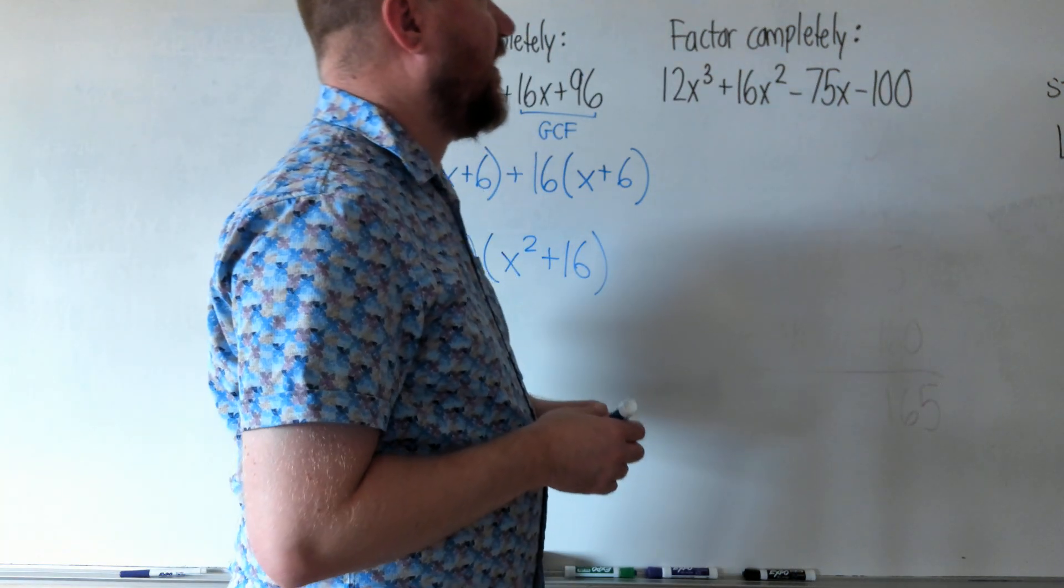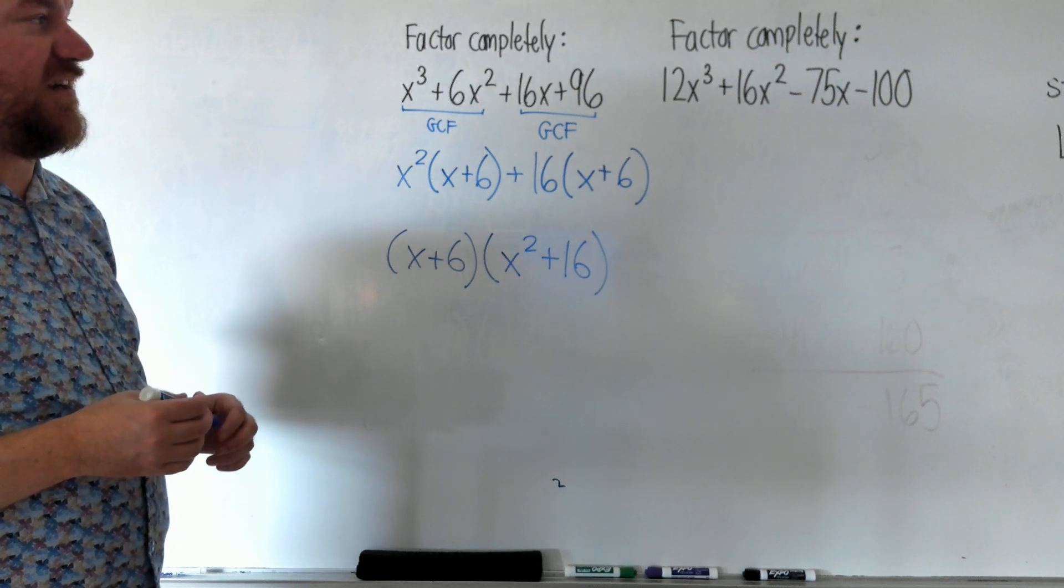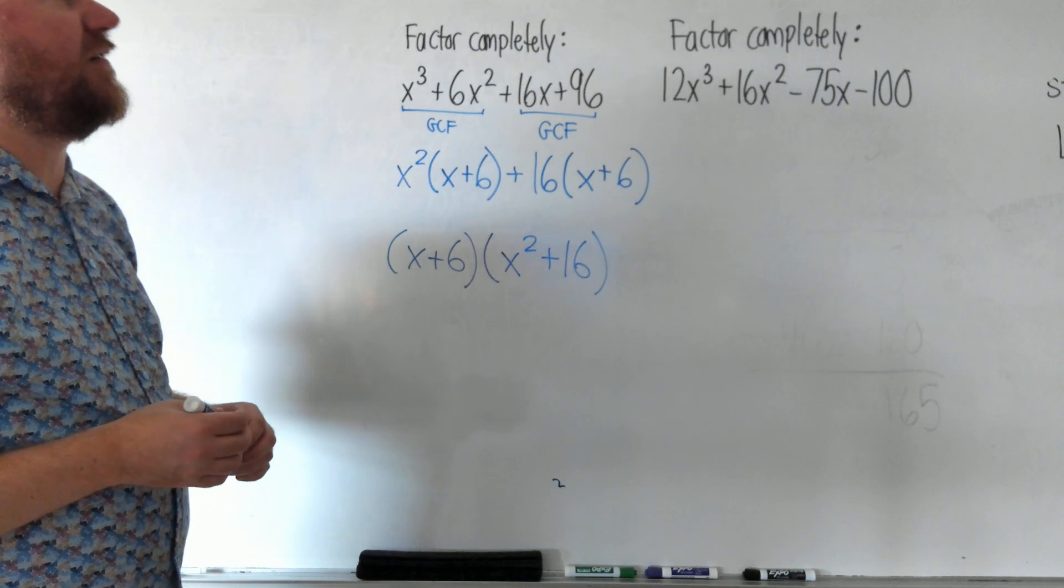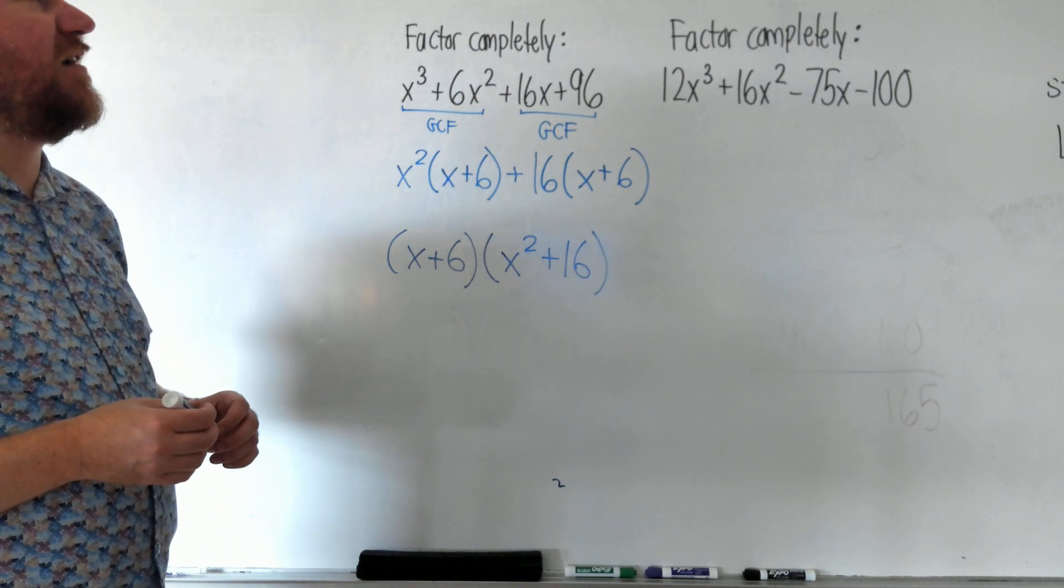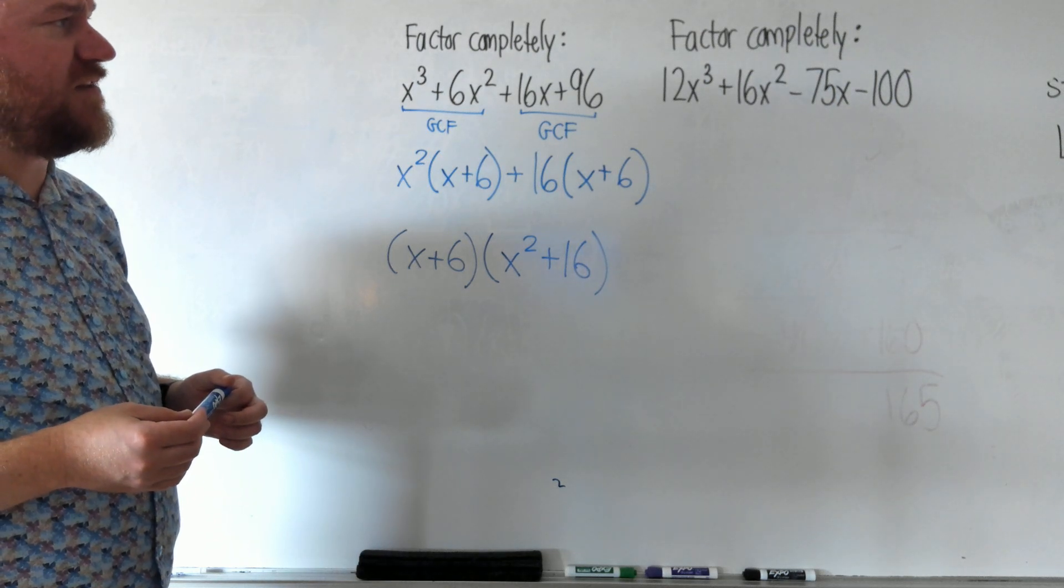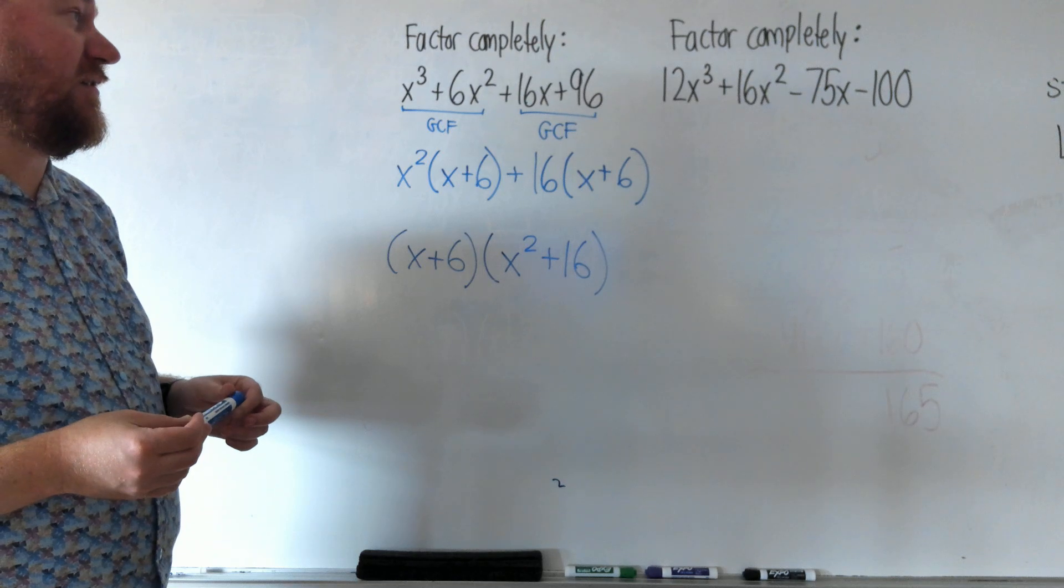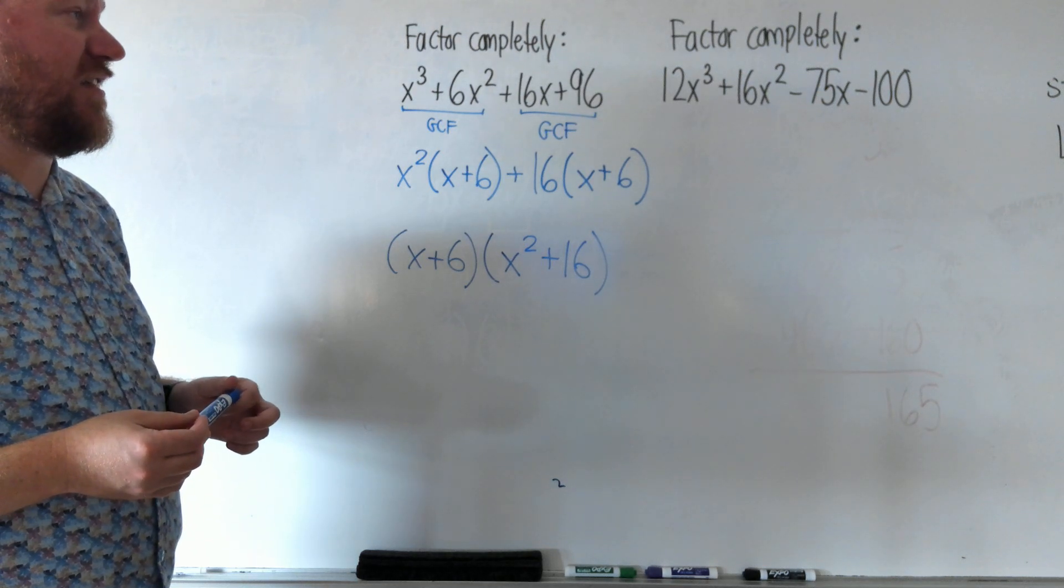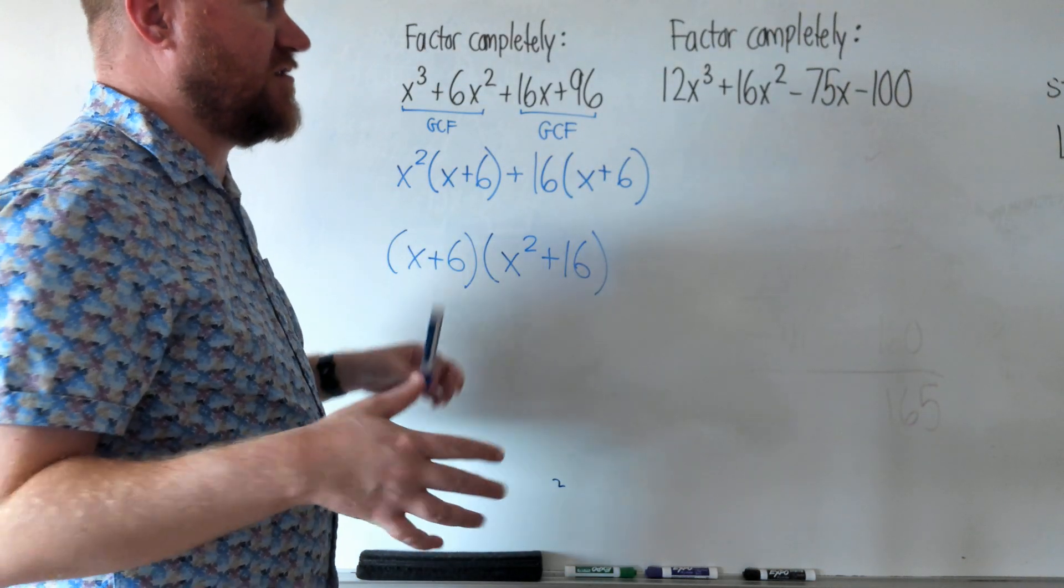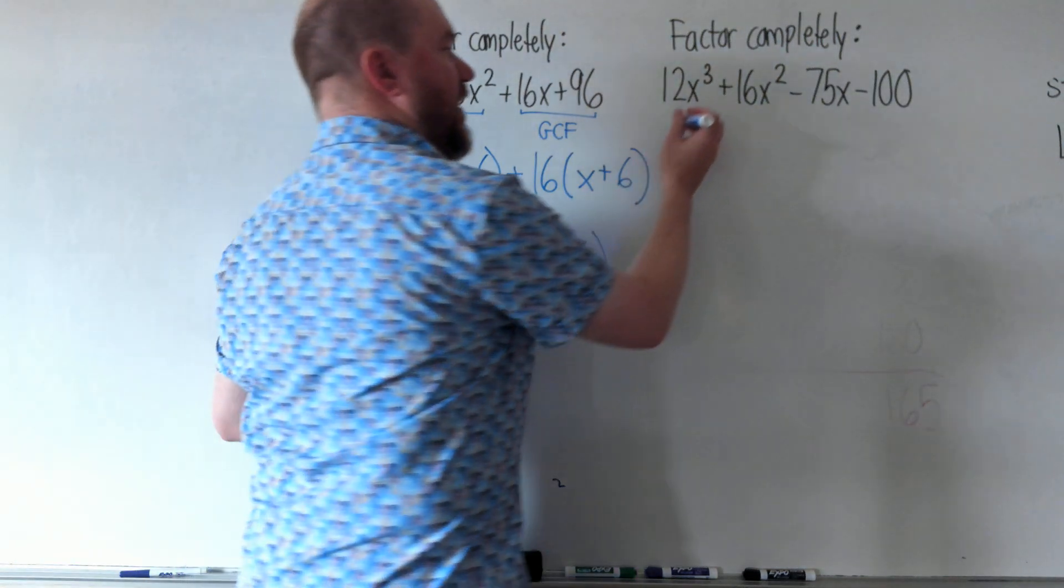Let's take a look at the second example here. Factor completely 12x³ + 16x² - 75x - 100. Same process here. We could do GCF first, right? All of these numbers are divisible by... maybe they're not divisible by anything. You should always check to see if there's a GCF of everything first. In this case, there's not, so let's just jump right to factoring by grouping.